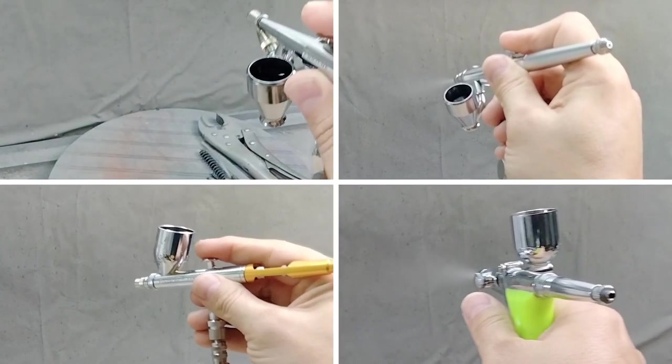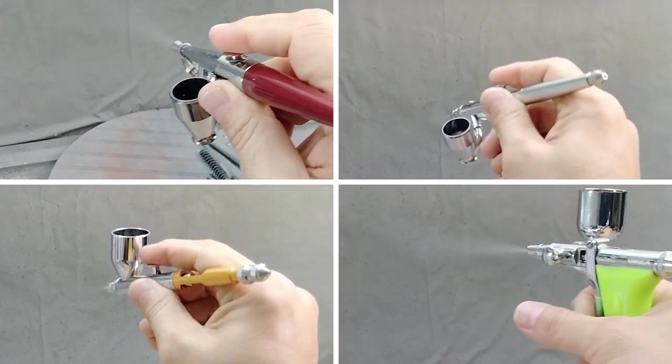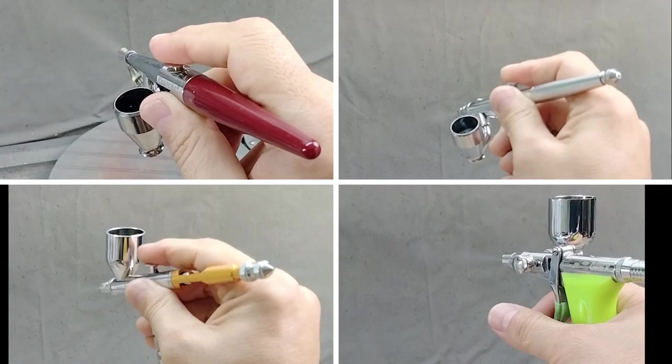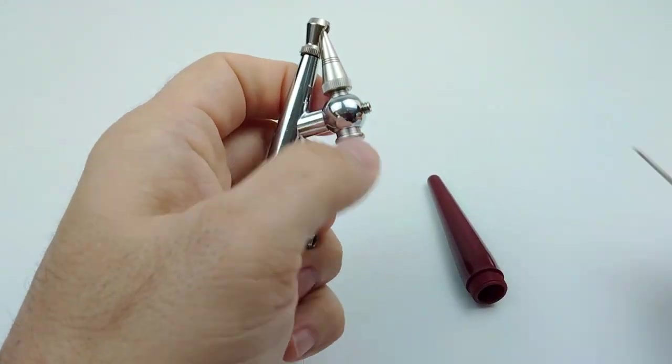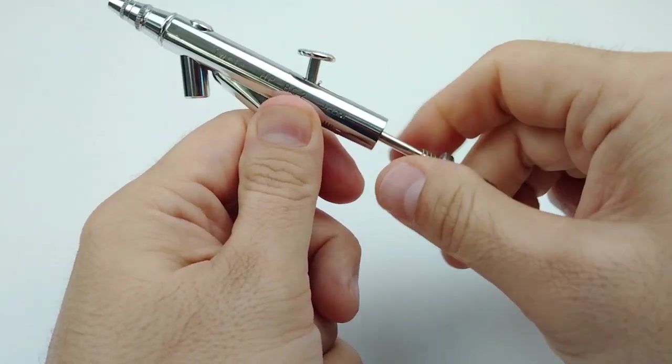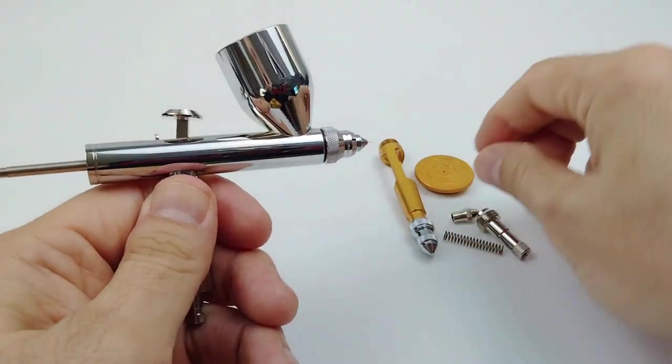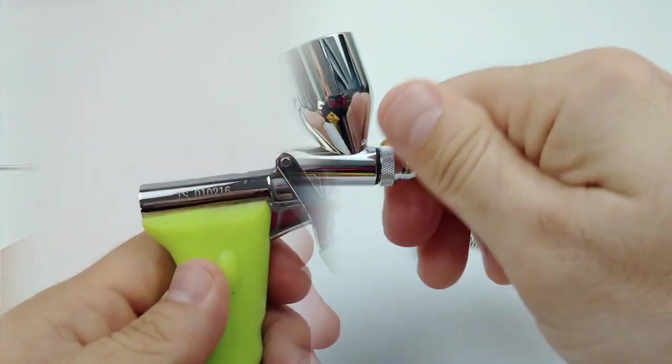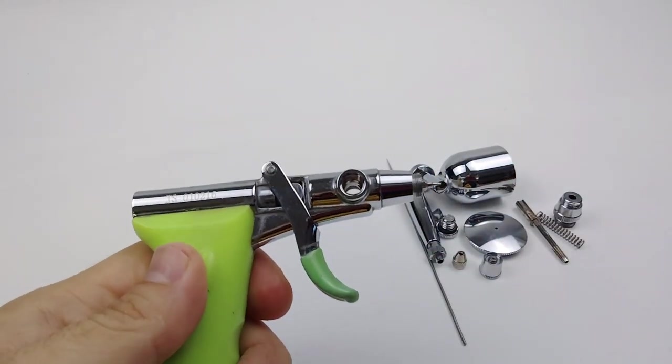No matter what type of airbrush you decide to go with, there are two first steps I recommend before putting one drop of paint through that airbrush. The first thing you should always do with a new airbrush is completely disassemble it. This will allow you to learn all the parts and pieces that make that airbrush go together and work, and will also show you which parts will and will not need to be cleaned when you're done with an airbrush session.